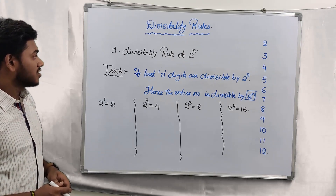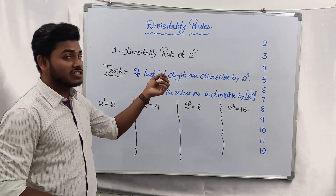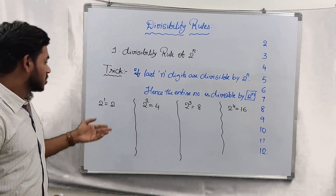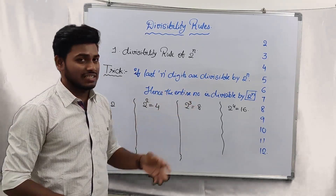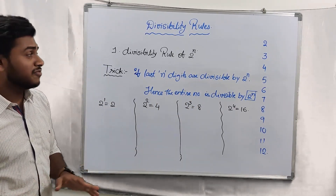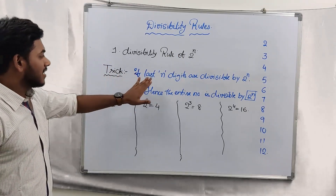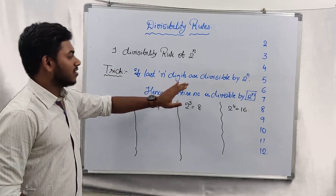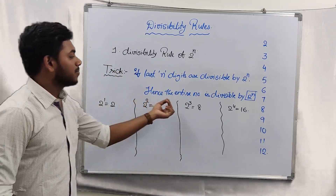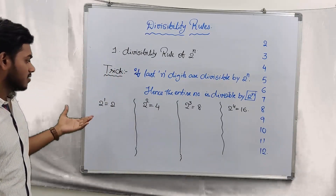This is the first divisibility rule, applicable for any number which can be written in the form of 2 power of n — whether it is 2, 4, 8, 16, 32, 64, 128, or anything that can be written in the form of 2^n, this rule is applicable. If the last n digits are divisible by 2^n, then the entire number is divisible by 2^n. Let's have a look at these examples.